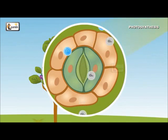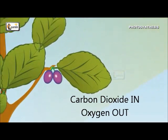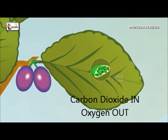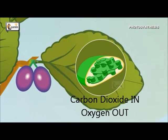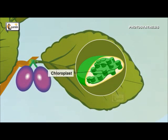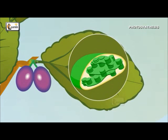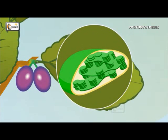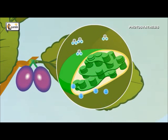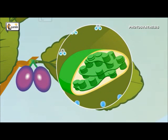Oxygen also comes out through these stomata. Leaves have important cells called mesophyll cells. These cells contain a green color component called chloroplast. This chloroplast is responsible for the green color of plants and leaves. Once the carbon dioxide and water reach the chloroplasts in the presence of sunlight, the process of photosynthesis starts to take place.